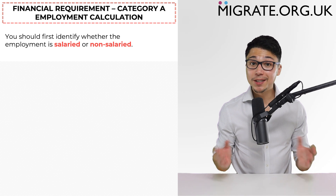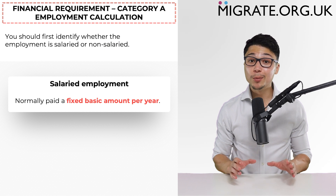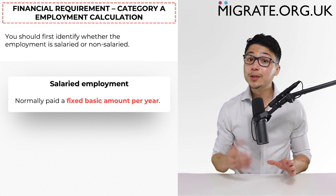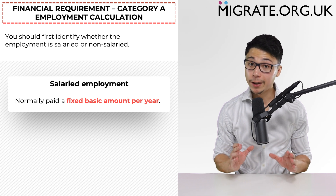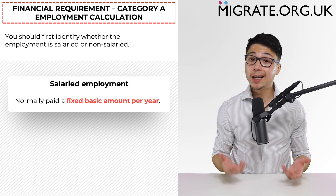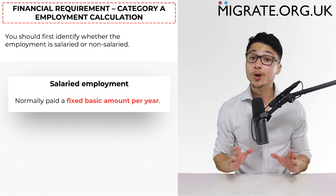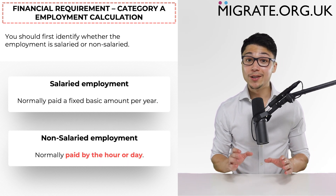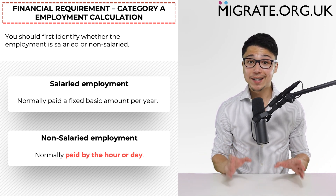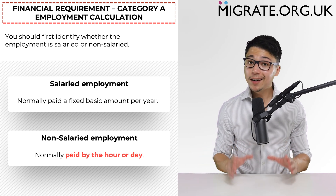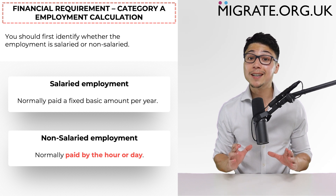The salaried/non-salaried distinction is not always clear-cut. Salaried employment typically involves being paid a fixed basic amount per year, such as £25,000 per year. It is also commonly the case that salaried persons can earn bonuses, overtime, or commission. Non-salaried employment, on the other hand, typically involves being paid by the hour or day — for example, £15 an hour or £300 a day. Like salaried employment, non-salaried employees may also receive commission, bonuses, and overtime.